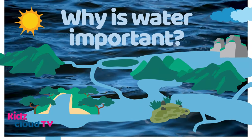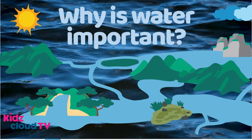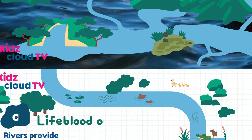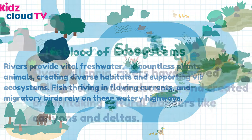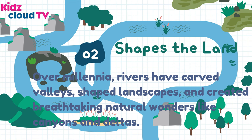Why is water important? First, it's the lifeblood of ecosystems. Rivers provide vital freshwater for countless plants and animals, creating diverse habitats and supporting vibrant ecosystems. Fish thrive in flowing currents and migratory birds rely on these watery highways. Water also shapes the land — over millennia, rivers have carved valleys, shaped landscapes, and created breathtaking natural wonders like canyons and deltas.